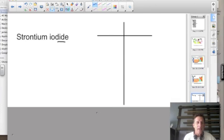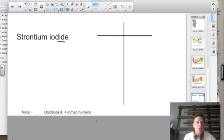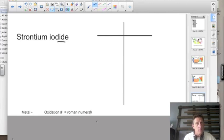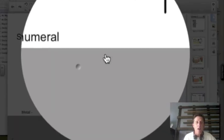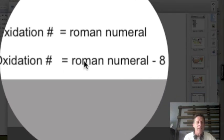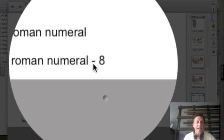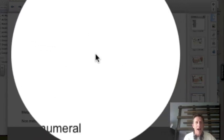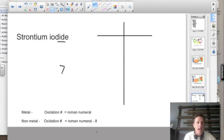That does not mean it has a seven oxidation number. If I have a metal, the oxidation number equals the roman numeral for that column. If I have a non-metal though, the oxidation number equals the roman numeral minus eight. Iodine had a roman numeral of seven, and I subtract eight from that. Seven minus eight equals negative one. So the oxidation number is one minus.